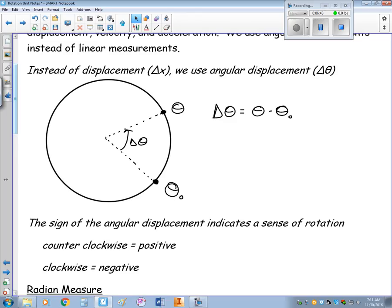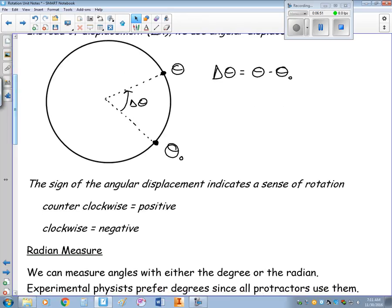We can have positive and negative displacements. What that comes down to is which direction they rotate. If something's rotating counterclockwise, we say it's a positive rotation. Clockwise is a negative rotation. I'll discuss why that is in a minute.